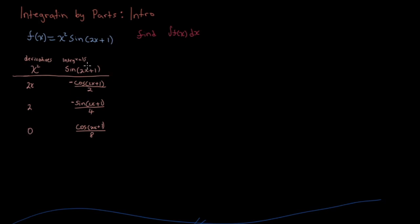And then on the integral side, you're going to keep taking the integral. So you're going to take the integral of sine(2x+1) and you get this cosine function here. You're going to take the integral of that function and you get this sine function, and then you take the integral of this sine function and you get this cosine function here. Then you stop right beside the 0.